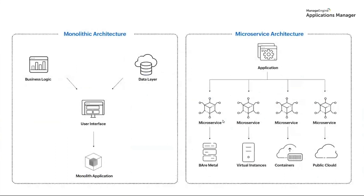So why exactly has managing these applications become so hard in the first place? This is because of the complexity induced by the transition from monolithic to microservices architecture. While microservices bring advantages like scalability and agility, their decentralized nature introduces a multitude of interconnected components that must be meticulously tracked. Monitoring individual services and interactions across a dynamic and elastic environment demands sophisticated tools that can capture granular performance data. Ensuring seamless communication between services, diagnosing latency bottlenecks, and maintaining overall system responsiveness in the face of frequent updates have all become extremely complex tasks.